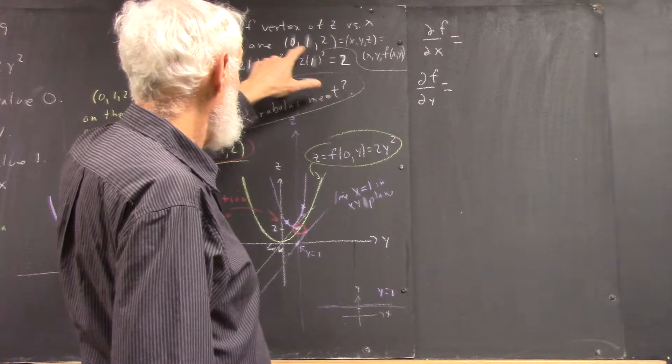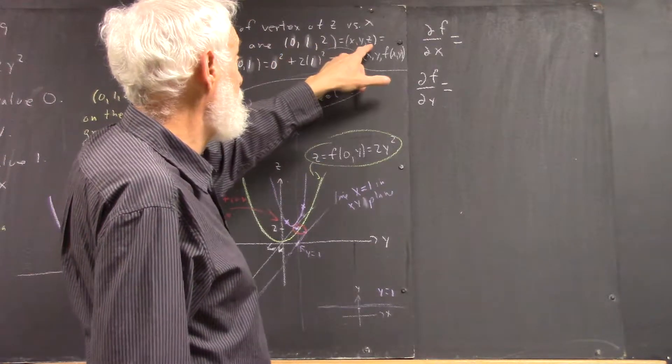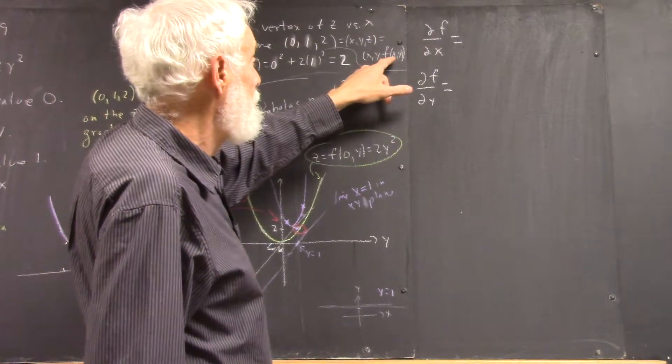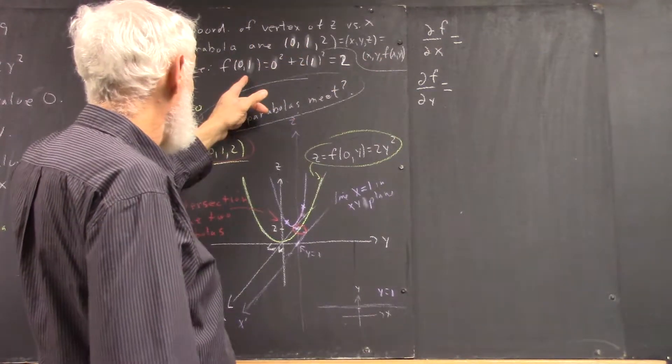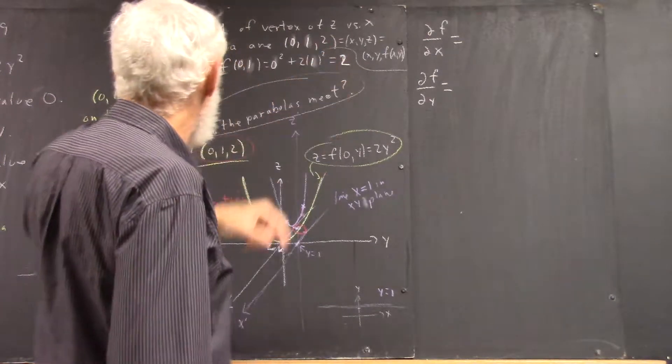Of course, because this is the X, the Y, and the Z-coordinate, where Z is F evaluated at X and Y. F evaluated at the X and Y coordinates gives us the Z-coordinate.